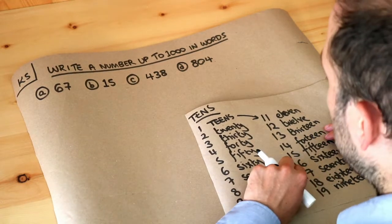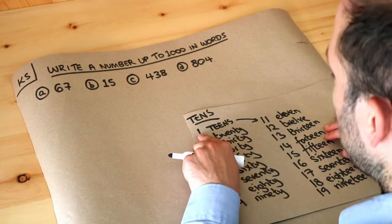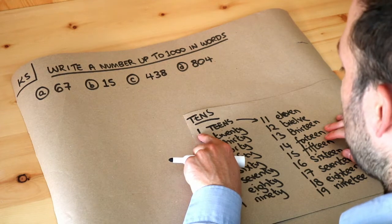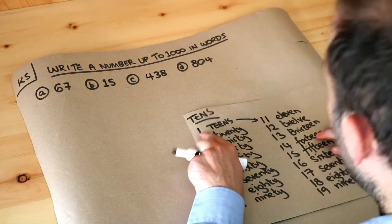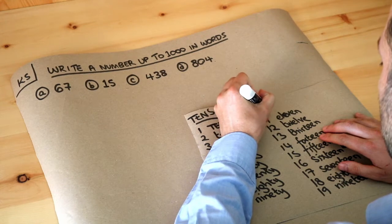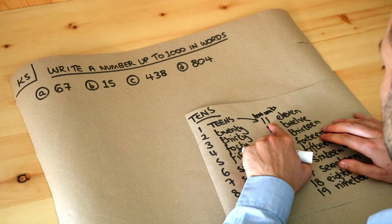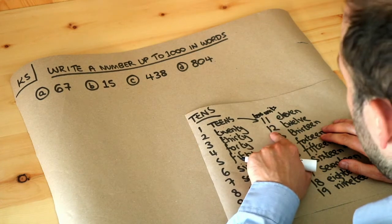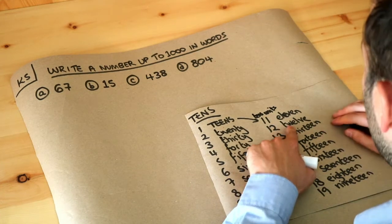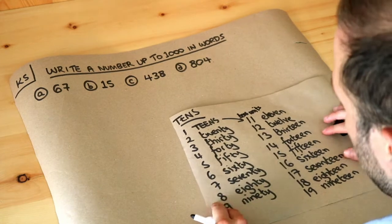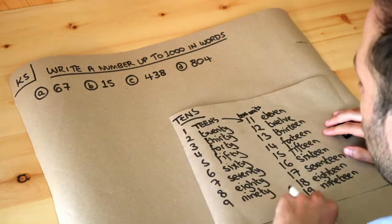But we have special words if the tens digit is one. And if the tens digit is one we also look at the units digit after. So this would be the tens digit, this would be the units digit. And if the tens digit is one but the units digit is also one we'd say eleven. If the tens digit is one and the units digit is two we say twelve, etc. So it's worthwhile remembering all these words.